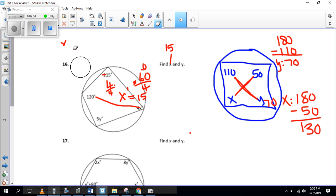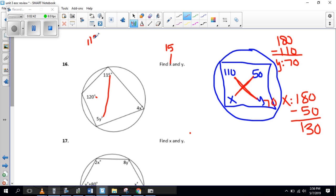And then we're going to do the same thing to find y. So we do angle plus angle, the opposite angles. So 115 plus 5y equals 180. So we subtract 115 from both sides.